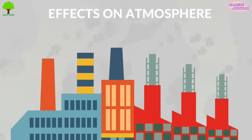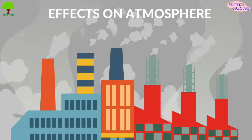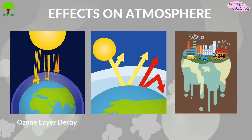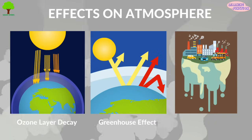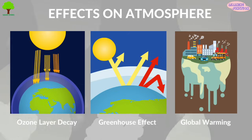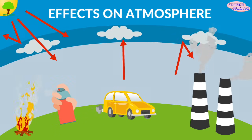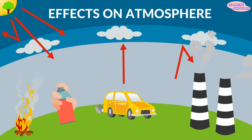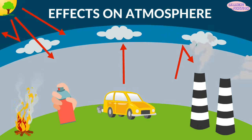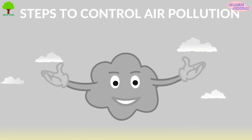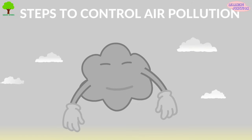Effects on atmosphere: some of the effects of air pollution on atmospheric conditions include the effect on the ozone layer, greenhouse effect, global warming, etc. The rising temperature and ozone holes are some of the problems which have attracted the attention of scientists all over the world. We should take proper steps to control air pollution.